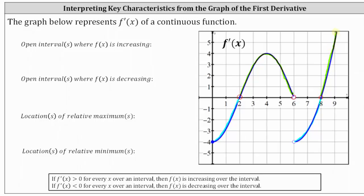Let's mark the signs on the x-axis. The derivative is negative, positive, negative, and then positive. Where the derivative is positive, the function is increasing, and where the derivative is negative, the function is decreasing.